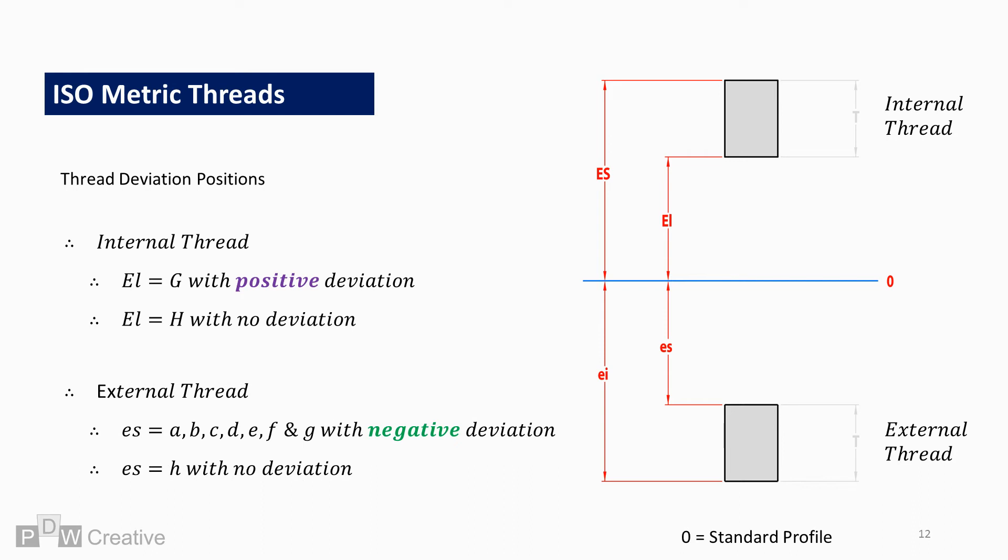The external threads deviate below the zero line, so are considered negative. Lowercase ES and EI mark this deviation. Lowercase letters are also used to identify the negative deviation. There are many deviation positions for external threads noted from positions A through to H.